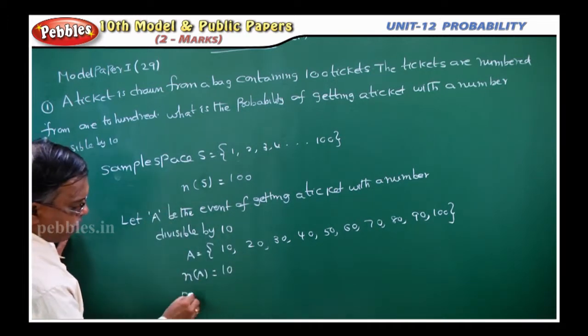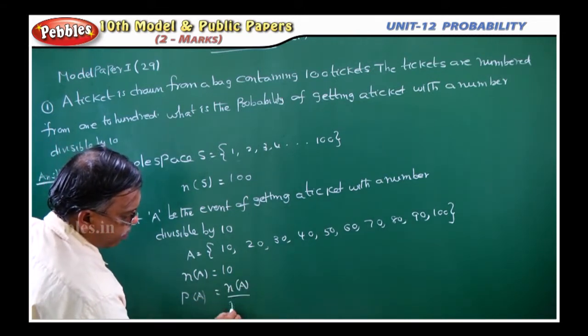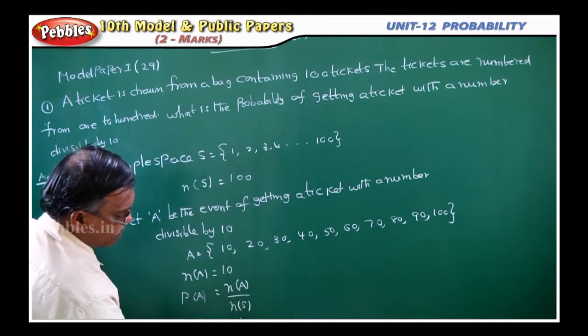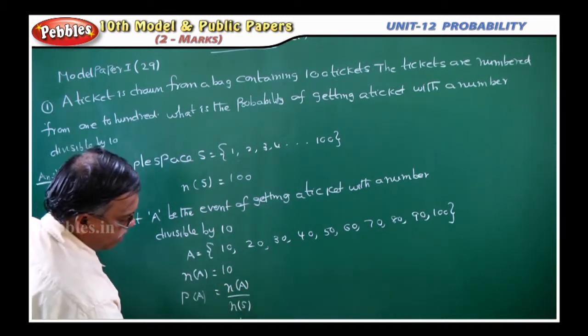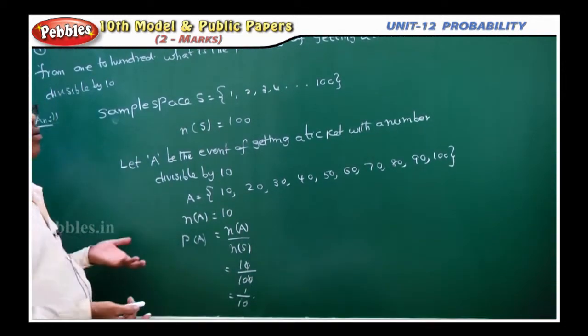What is P of A? Probability of getting an event is equal to, what is the formula? N of A by N of S. What is N of A here? 10. What is N of S here? 100. 0, 0 cancel, nothing but 1 by 10. That is your probability.